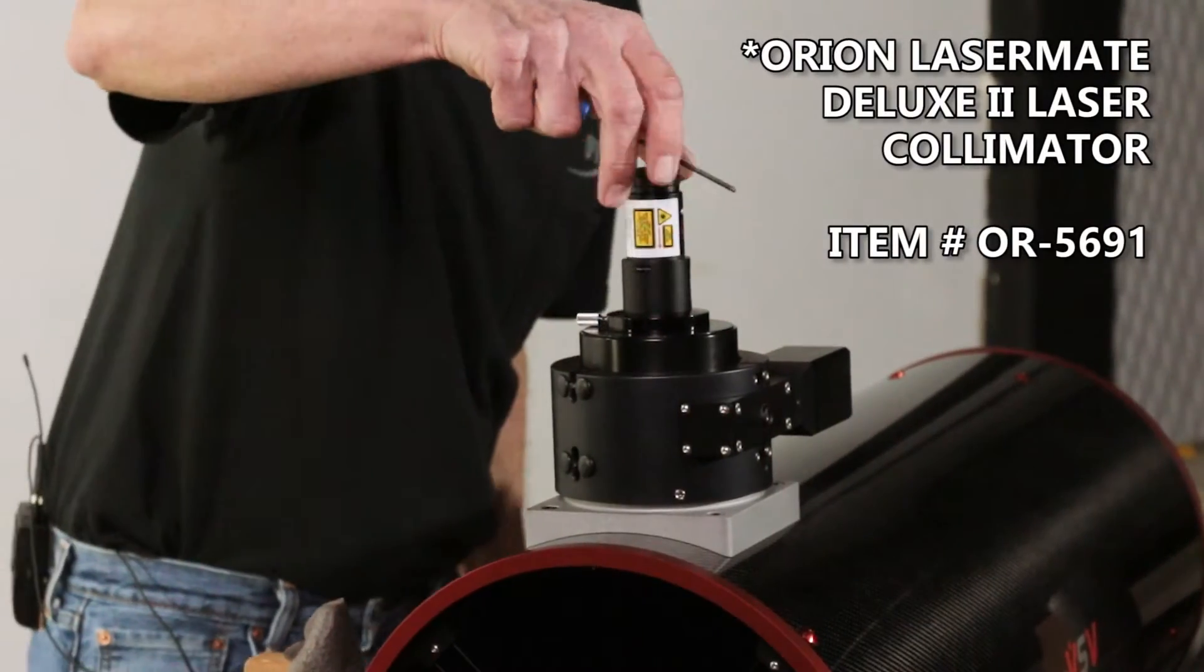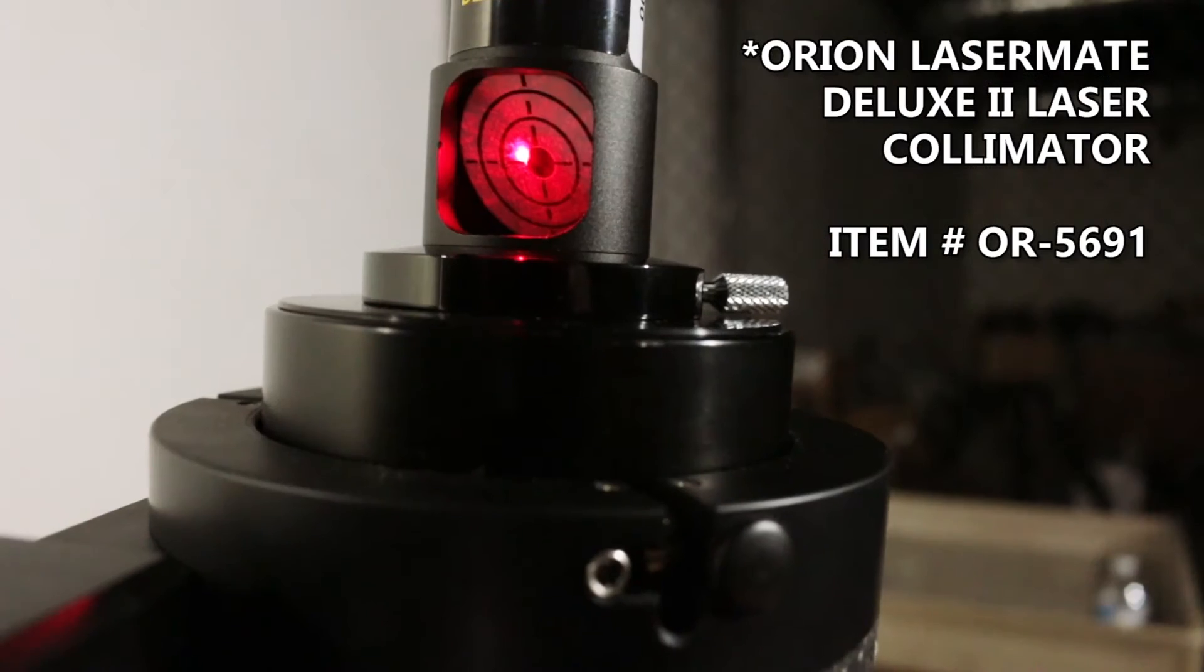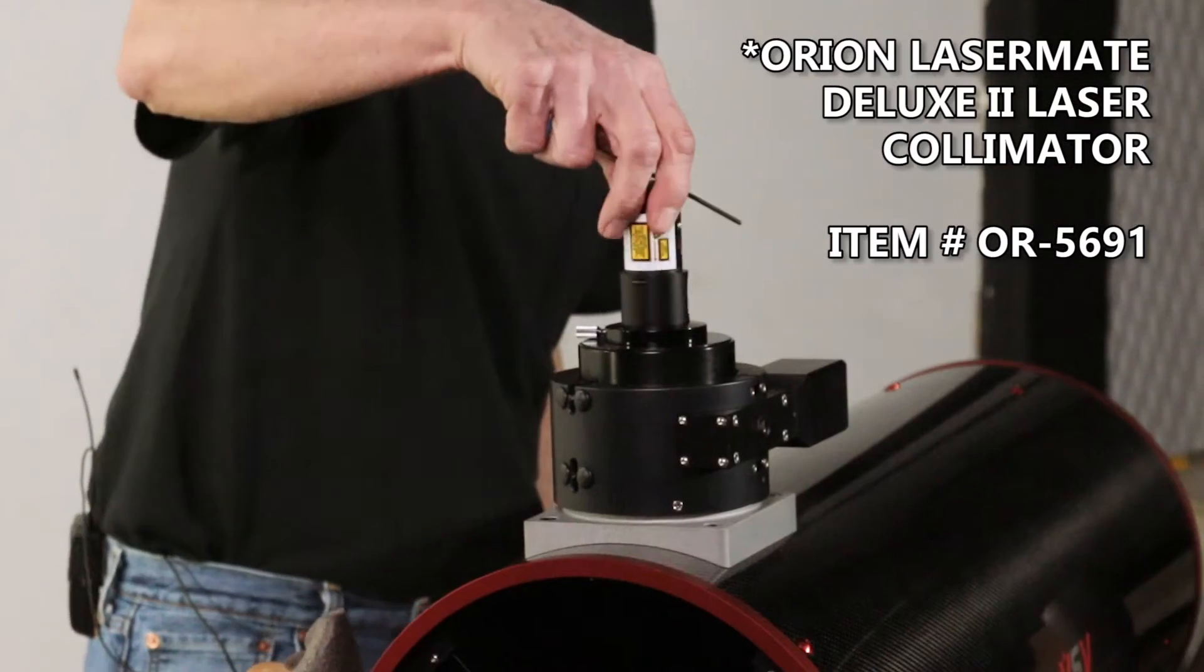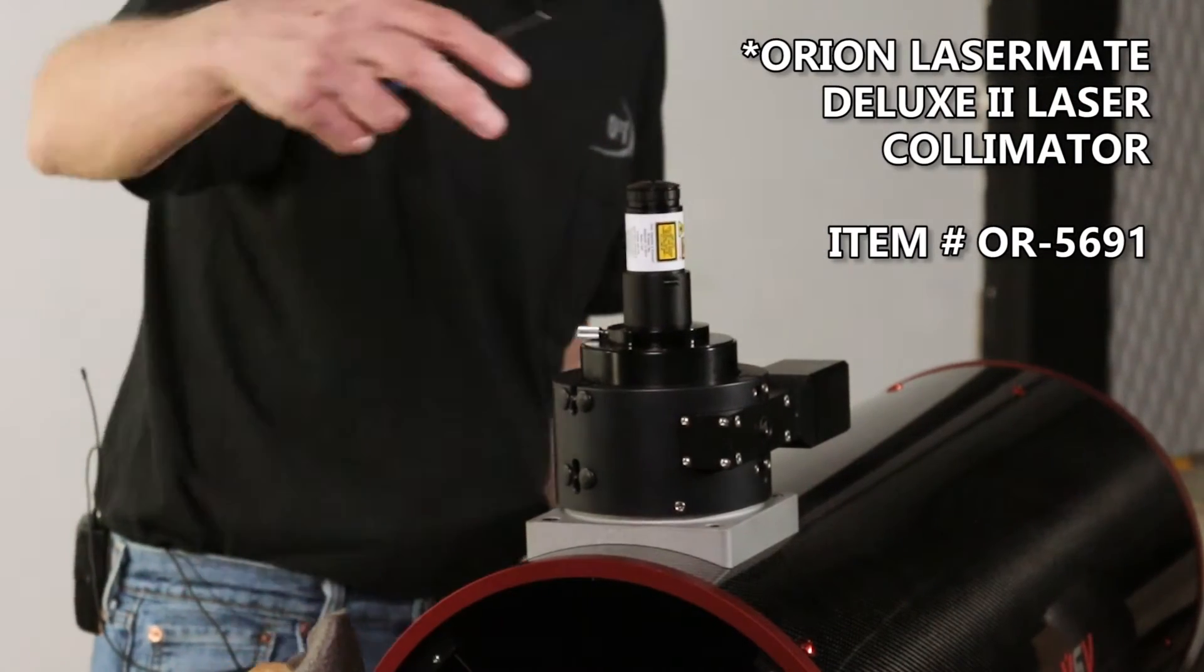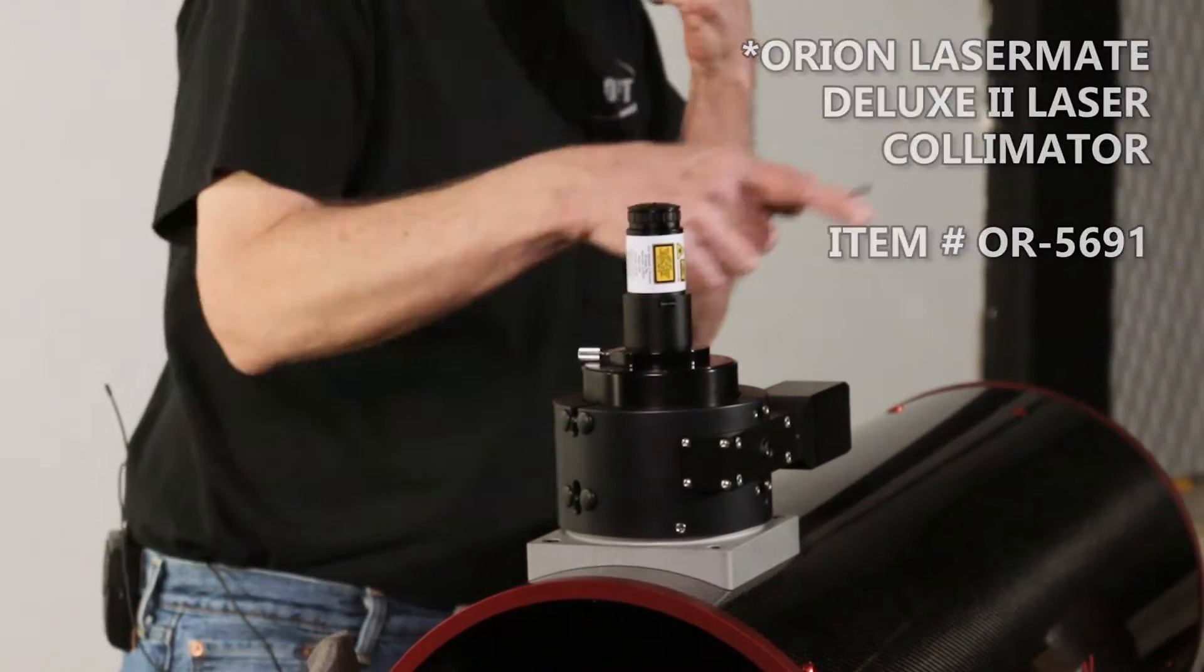So we're using an Orion LaserMate II which actually has a small target in it for return, so I can see it while I'm actually adjusting the secondary and the primary at the same time.